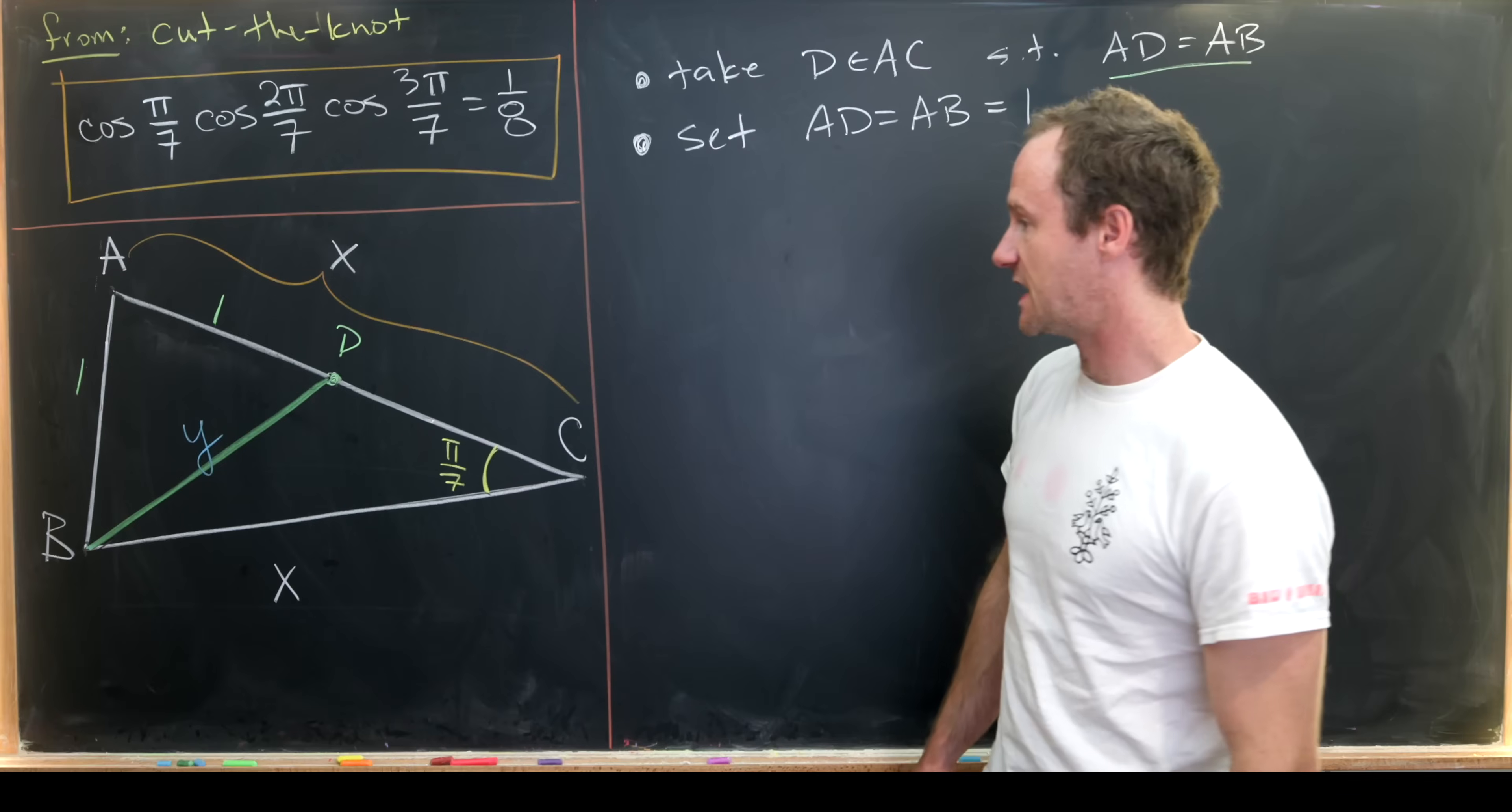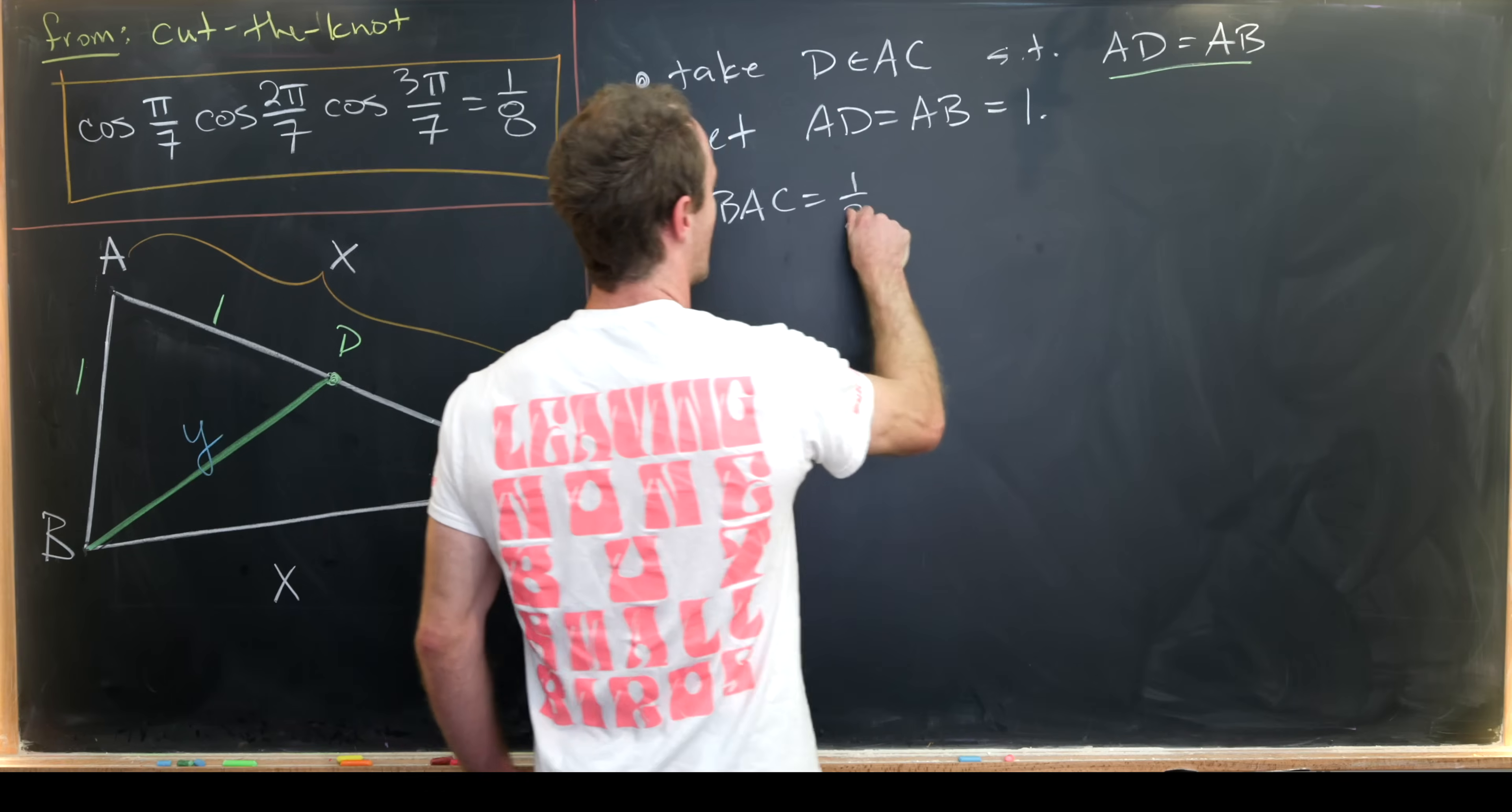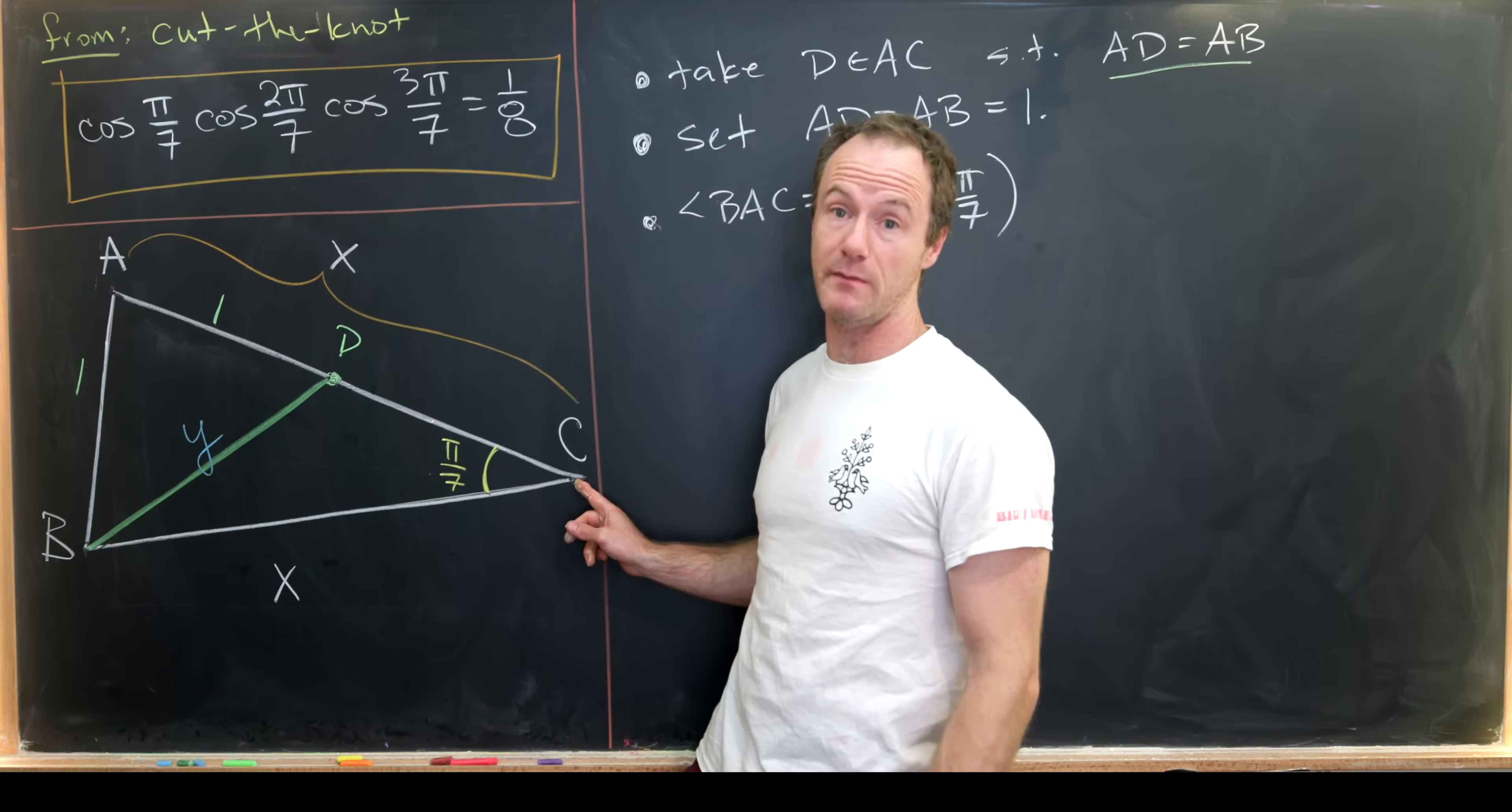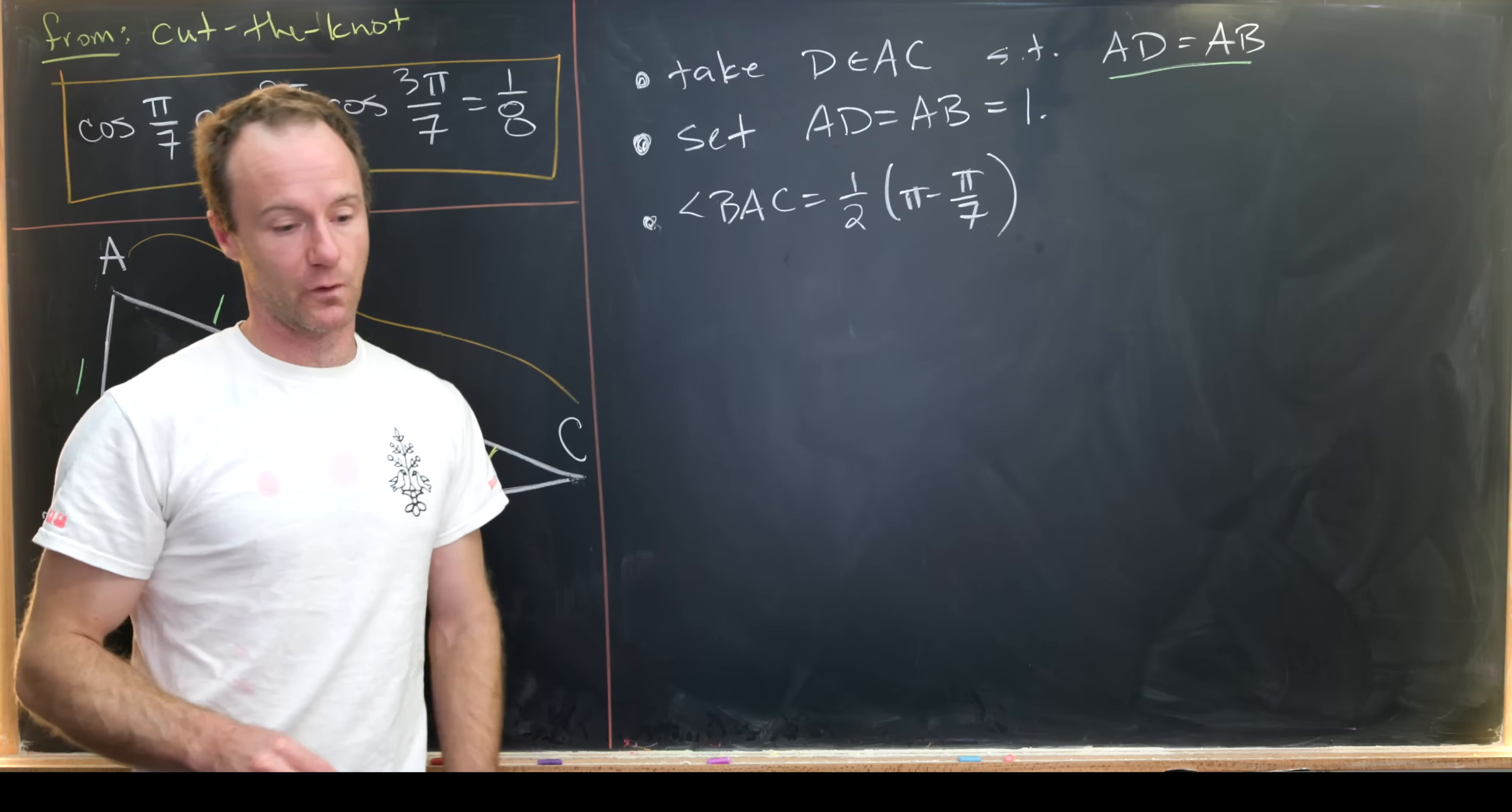So let's notice that angle BAC is equal to half pi minus pi over 7. So angle BAC is equal to one half pi minus pi over 7. So how do we know that? Well angle BAC and angle ABC are the same measurement. And then we know that this angle, this whole angle here and pi over 7 must add up to pi. So using those two pieces of information and solving for the measurement of angle BAC gives us this formula right here.